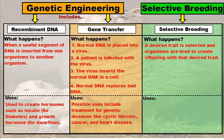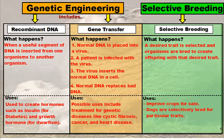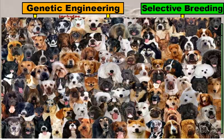Selective breeding is called that because there are certain traits that we like. A desired trait is selected and organisms are bred to create offspring with that desired trait. Some uses of selective breeding are improved crops for farmers — the better the crops you have, the better sales you have and the more money you make. Also, dogs are selectively bred for particular traits. There are a ton of different breeds of dogs, and part of the reason is humans have selected traits that they like and bred for those particular traits, creating new breeds of dog.